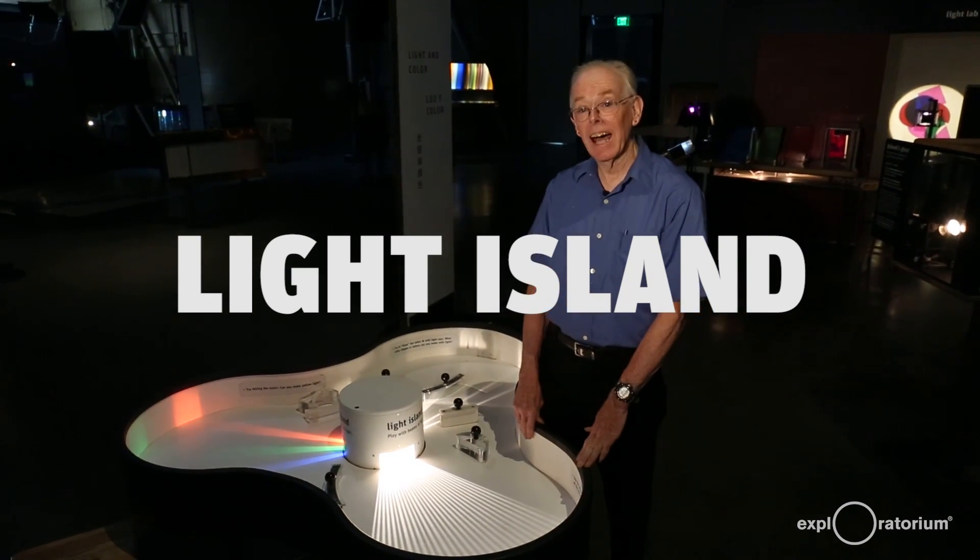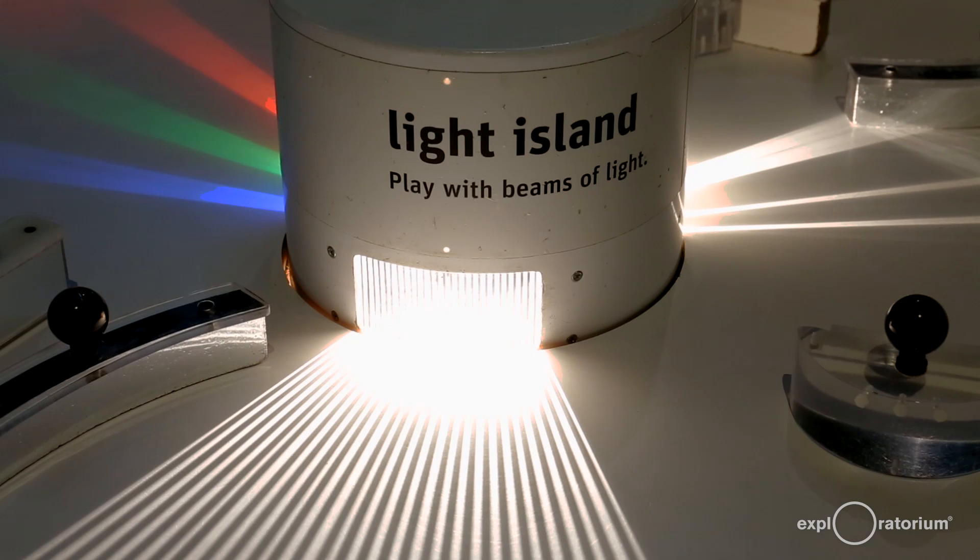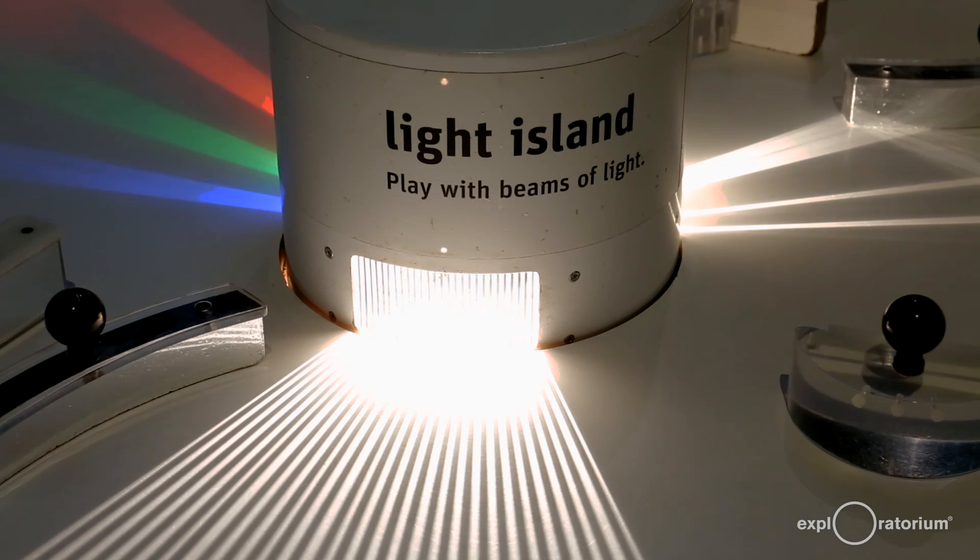This is the exhibit, Light Island. Inside of the box there's a light bulb and it shines through a metal comb. You can see that light travels in straight lines.